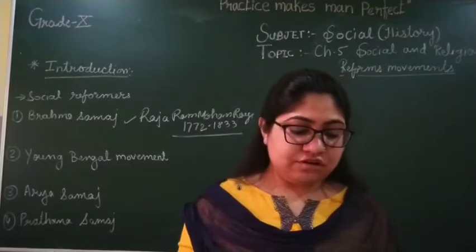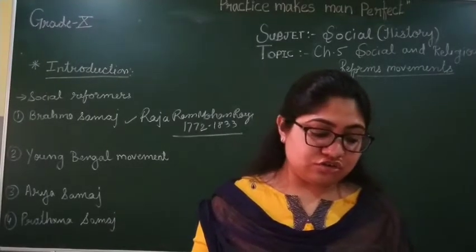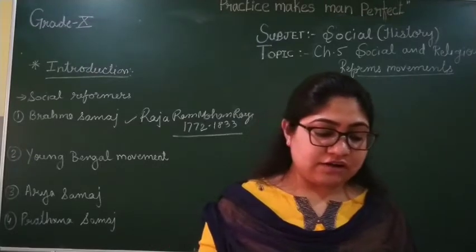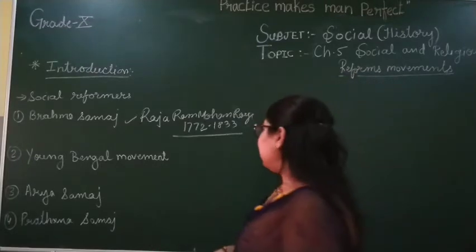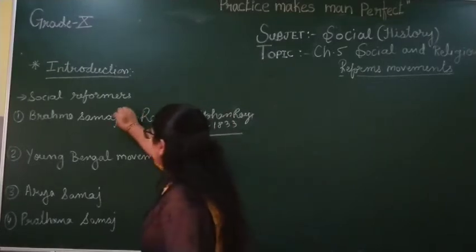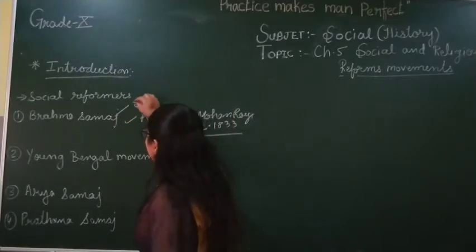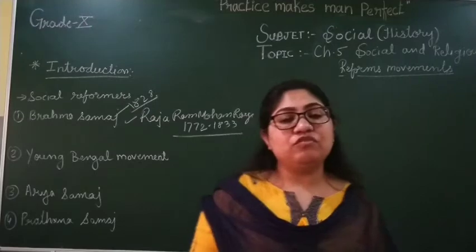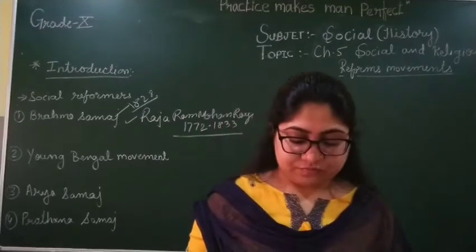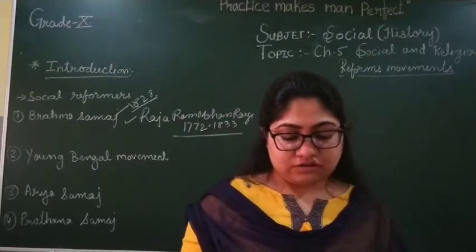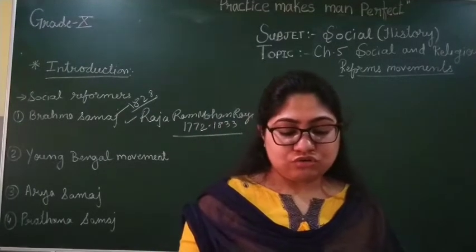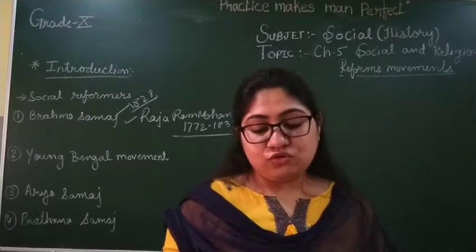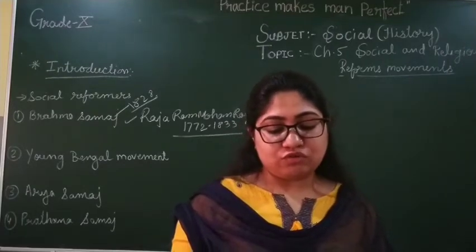He started an Atmiya Sabha in Kolkata with some friends and started a social and religious reform movement in Bengal. He started Brahma Samaj in 1828 with some friends. After that, he wanted to rebuild a new Hindu society on a new philosophical foundation.